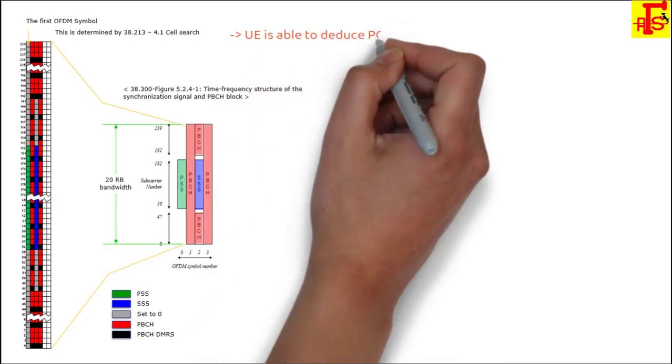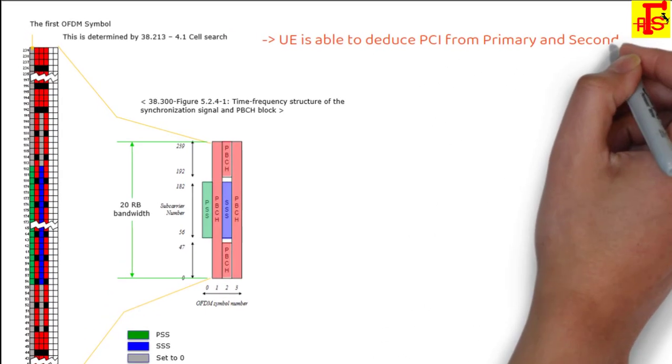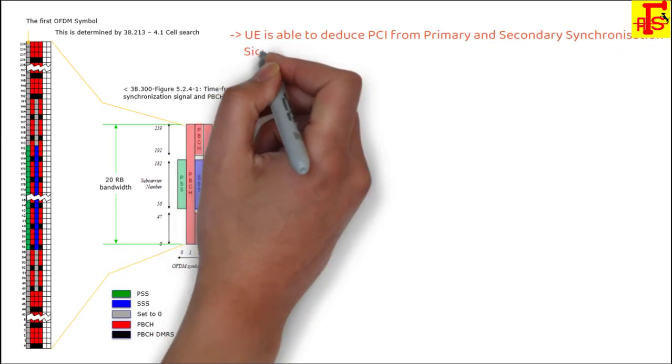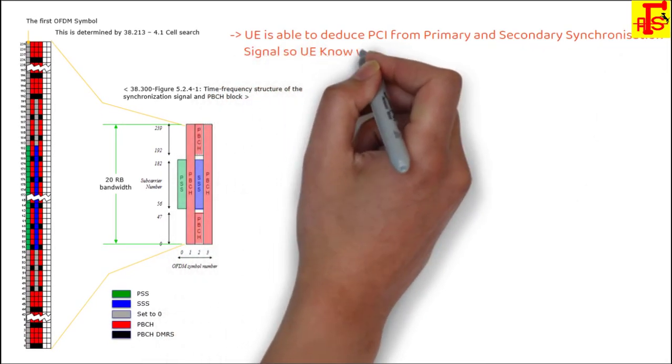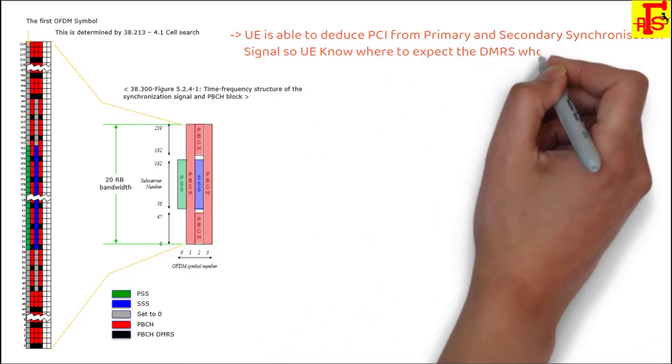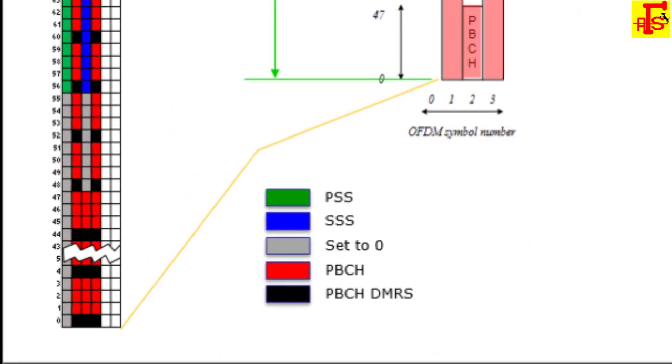UE is able to deduce PCI from primary and secondary synchronization signals. It will decode PSS and SSS to get the PCI, then apply PCI mod 4 rule formula to get the DMRS location. Then UE knows where to expect the DMRS when decoding the PBCH payload.